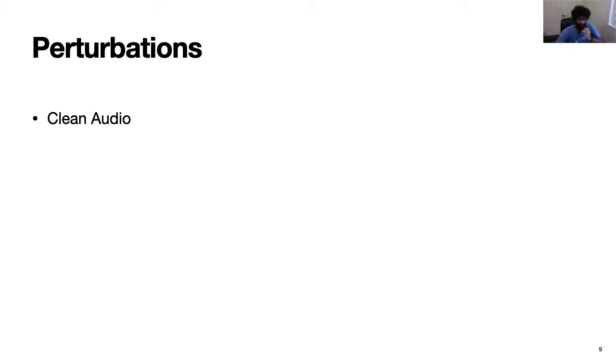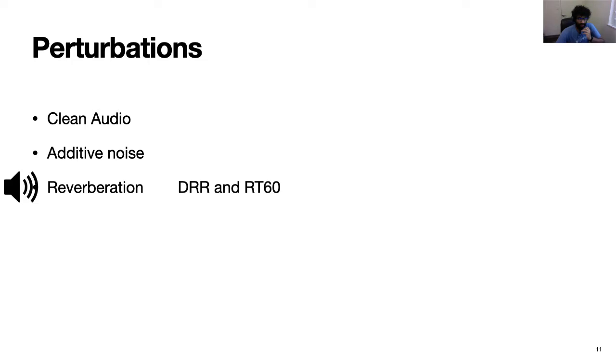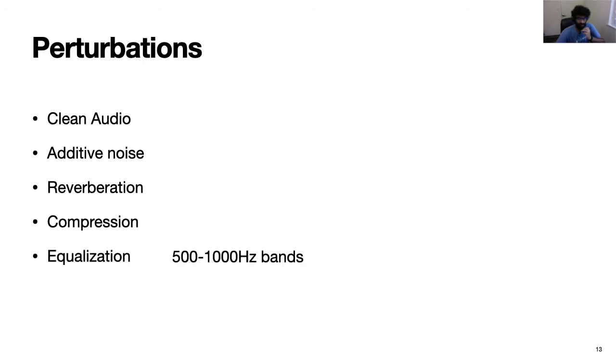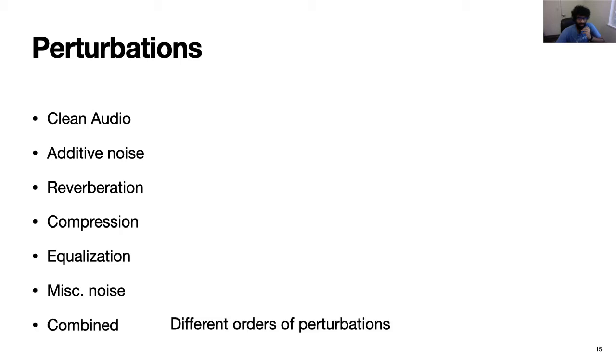So audio perturbations are just some noise which is added to a clean audio. And let's listen to a few examples. So let's listen, first listen to a clean audio first. I had to cling tight to the backstay. Let's now listen to one example of additive noise like white noise. We can now listen to an example of reverberation. We can now actually listen to one example of compression like MP3 compression. Equalization noise. And a few examples of miscellaneous noises. For example, let's listen to this pop sound.